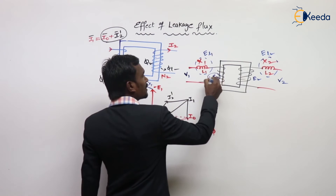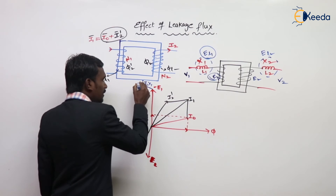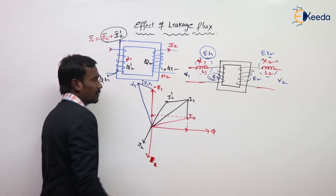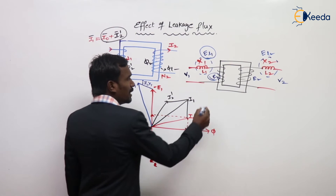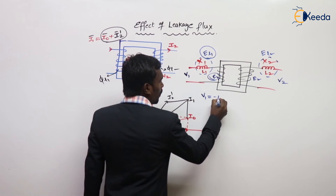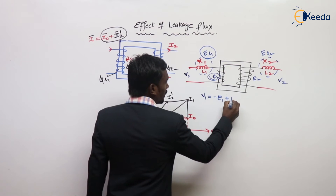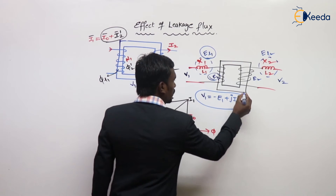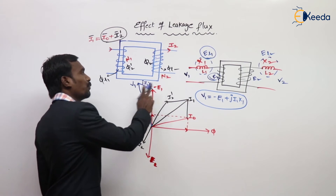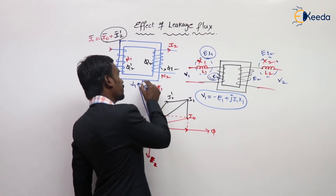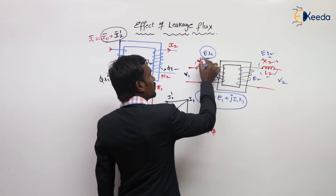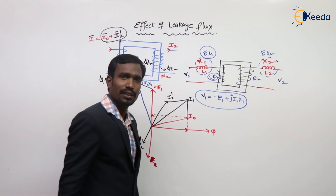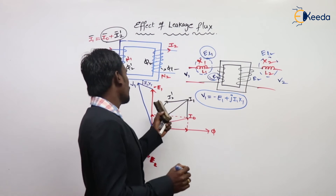So the equation is: E1 + j·I1·X1 = V1, which gives V1 = −E1 + j·I1·X1. This j·I1·X1 term represents the fictitious reactance drop, which compensates the leakage flux voltage in the primary.